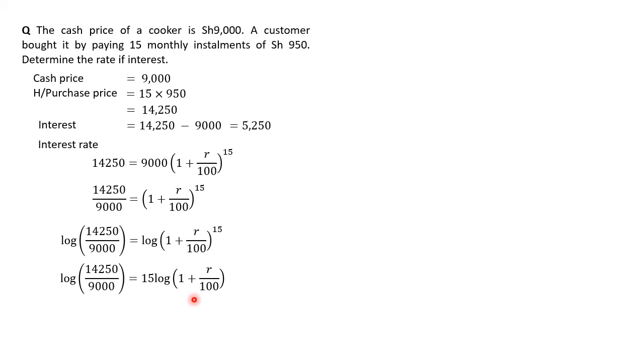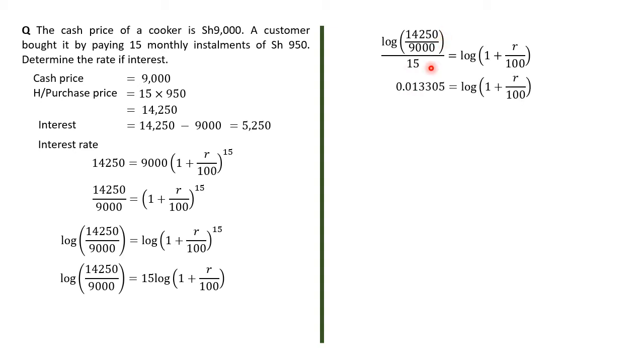What do we do next? Divide by 15 both sides, where we have log of 14,250 divided by 9,000, all of that divided by 15 is the same as log of 1 plus R over 100. Please notice that 15 is dividing the logarithm of a fraction. Now, I suggest that at this point, students should now use the calculator. Don't use it before here.